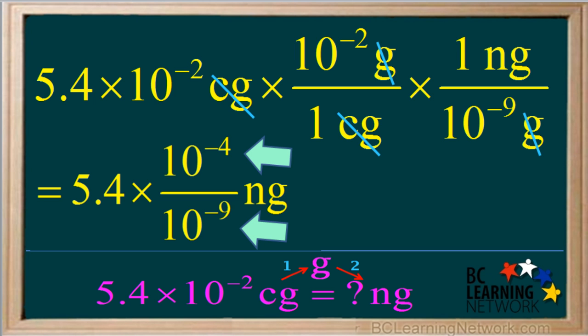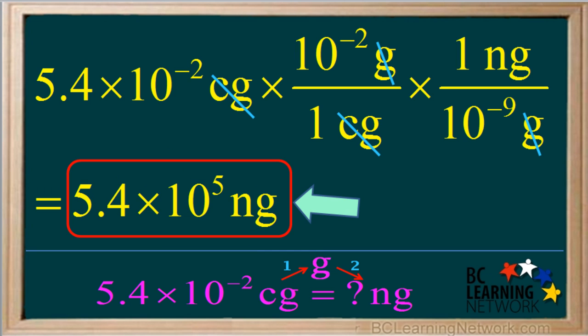When dividing, remember, subtract the exponents. Negative 4 minus negative 9 is the same as negative 4 plus 9, which comes out to positive 5. So our final answer is 5.4 times 10 to the 5th nanograms.